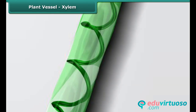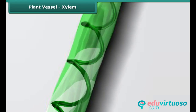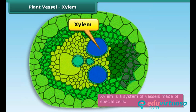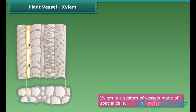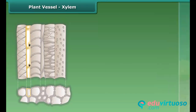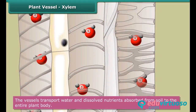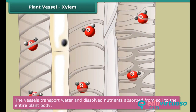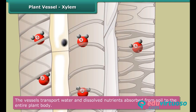A network of tube-like vessels runs through the entire body of a plant. This system of vessels is known as xylem. These vessels are made of special cells. They act as channels that connect the roots to the leaves through the stem and the branches. Xylem transports water and dissolved nutrients absorbed from soil to the different parts of the plant through this network of vessels.